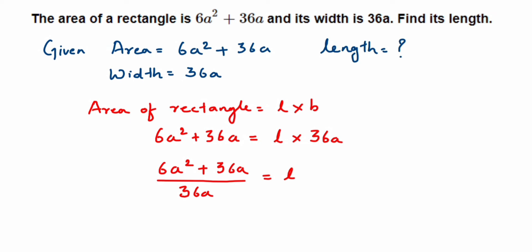So here we have 6a² + 36a, right? So this is 6 × a × a, and this 36 is nothing but 6 × 6 × a. Now 36 can be written in many ways. I have taken 6 × 6 because 6 is present here.